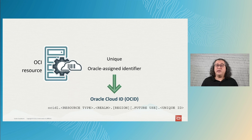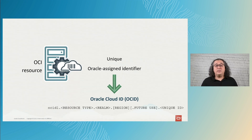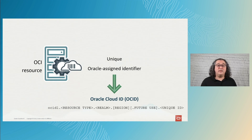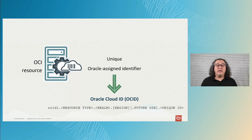An OCID starts with the OCI version, OCID1, followed by the resource type — the tenancy, instance, or VCN. Then comes the realm, indicating whether it's a commercial region, government, or federal government. The region represents which region the resource is in, and if the resource is the tenancy, it will be blank, as the tenancy is a global resource. There is also a field reserved for future use that is currently blank, and at last we get the unique ID.